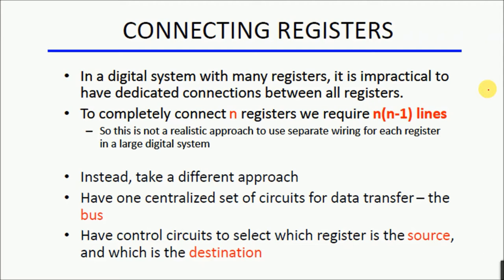Since there is no limit on which register can be connected to which module, ideally all registers and modules should have connections with all the rest. So each register should be connected with every other register. But a problem arises with this ideal approach: to have a dedicated connection of every register with every other register, we require a huge number of connecting lines.